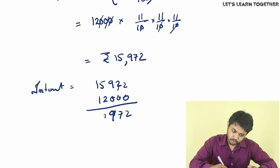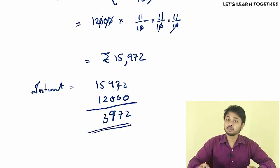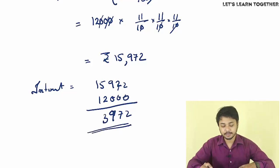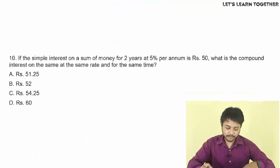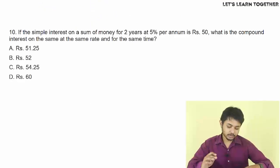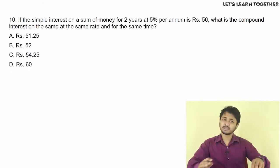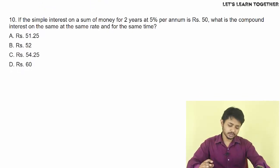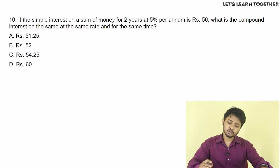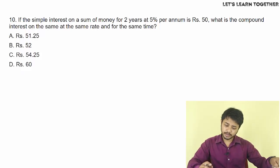So the compound interest is 15,972 minus 12,000, which equals 3,972. That is the correct answer.